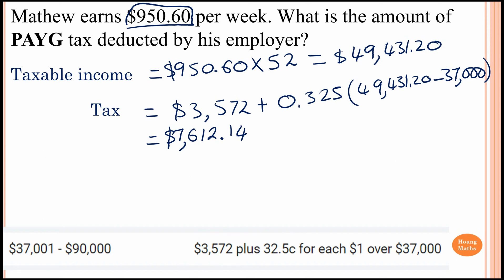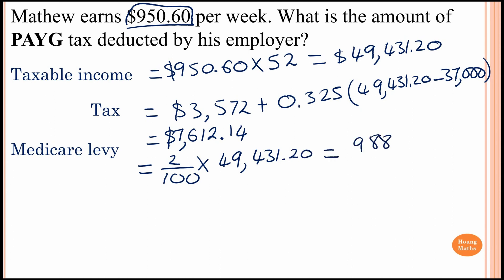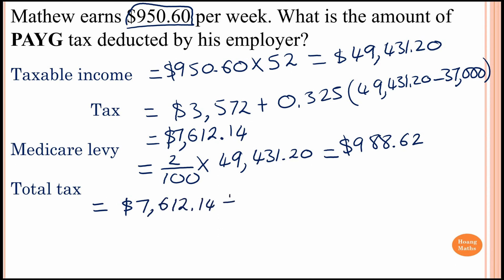Matthew also has to pay the Medicare levy of 2%. So that is 2 over 100 times his taxable income of $49,431.20, which equals $988.62. The total tax is therefore $7,612.14 plus $988.62, which equals $8,676.